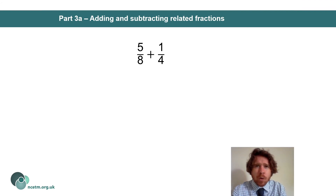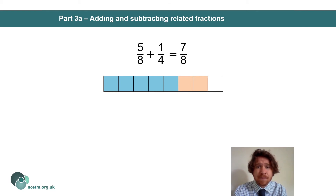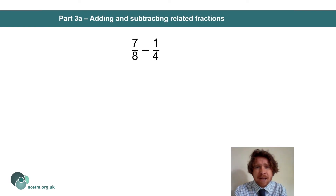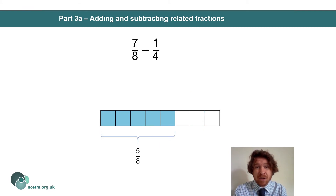For students to answer five-eighths plus one quarter, I would show a bar model with the five-eighths shaded, then add one quarter to that amount. I'd have a discussion about what one quarter looks like on this bar model — hopefully students can tell me it's the same as two eighths. So one quarter equals two eighths, and altogether we have seven lots of one eighth, or seven-eighths: five lots plus two lots of one eighth. For subtraction, seven-eighths subtract one quarter: beginning with seven-eighths, and one quarter equals two-eighths, so we take seven-eighths and reduce by two-eighths, leaving five-eighths.